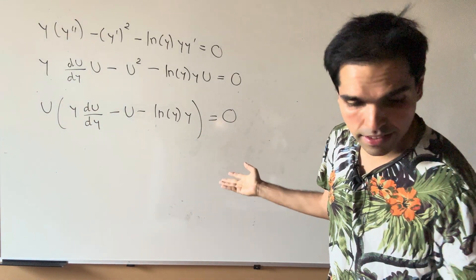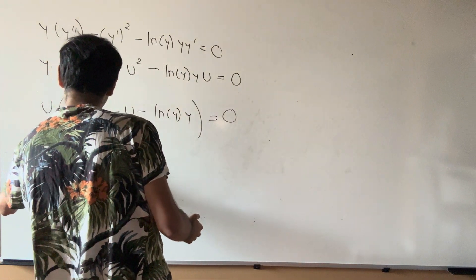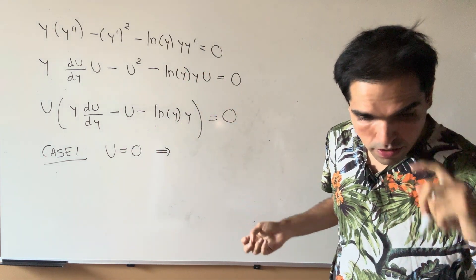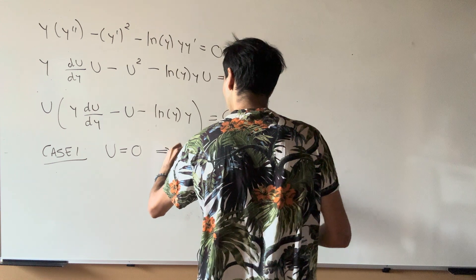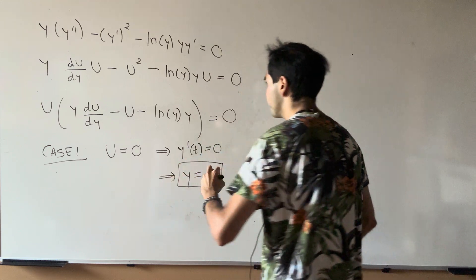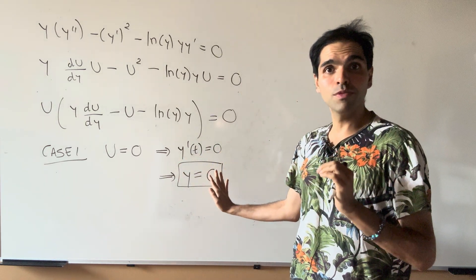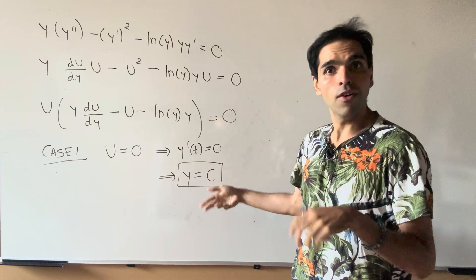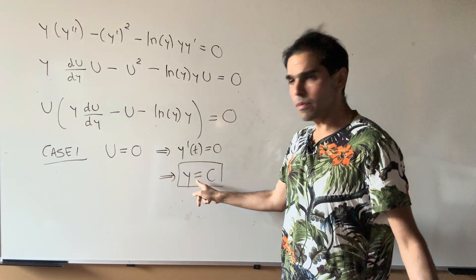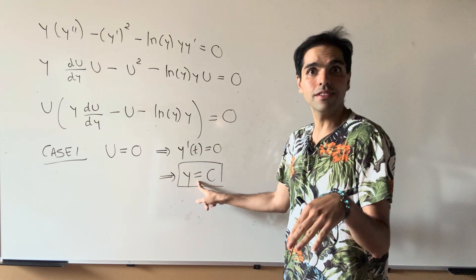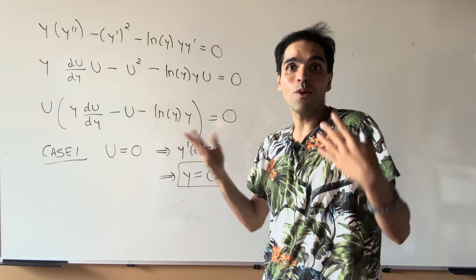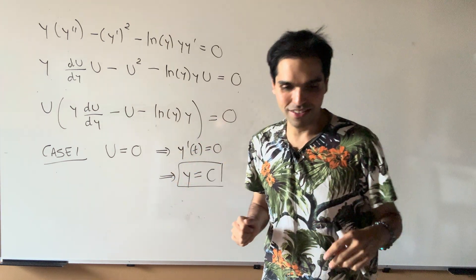We now have two cases. The first case is if u equals zero. But remember u was just y prime, so in that case y prime of t equals zero, which means y is a constant. That constant has to be greater than zero in order for the ln to be defined. The only issue is y prime is zero, so the denominator would be zero — but if you accept the convention that zero over zero is zero, then this is actually a valid solution.